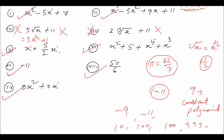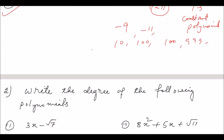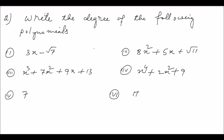That is the example for question one. For more details about polynomials, watch the introduction video linked below in the playlist. Now question number two: find the degree of the following polynomials. Degree means the highest power of the variable in the polynomial. Check the introduction video for more details on degree.